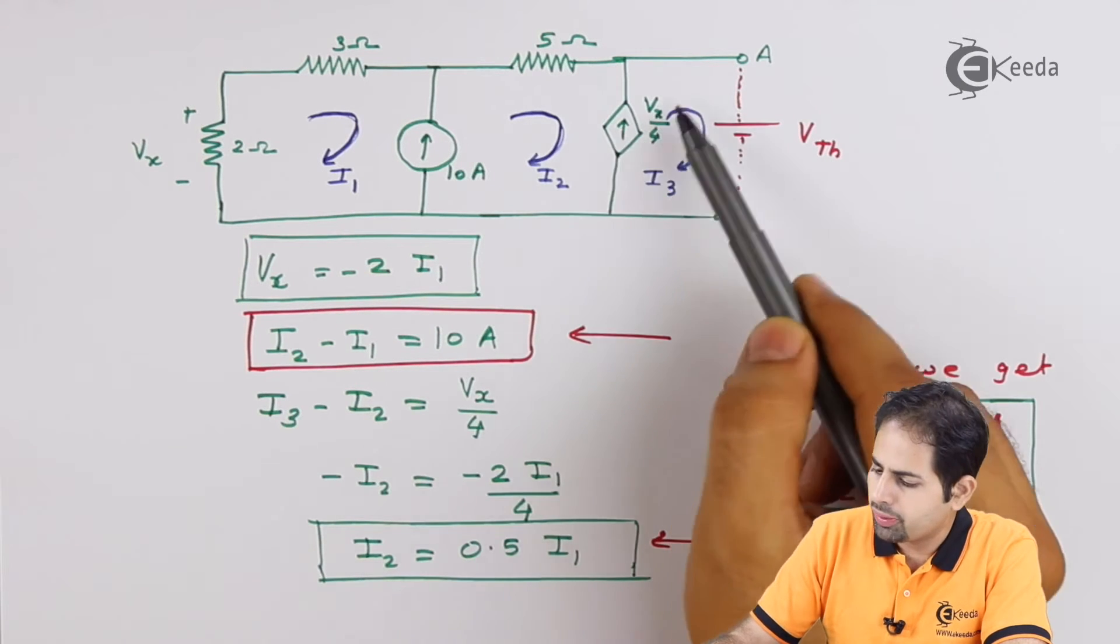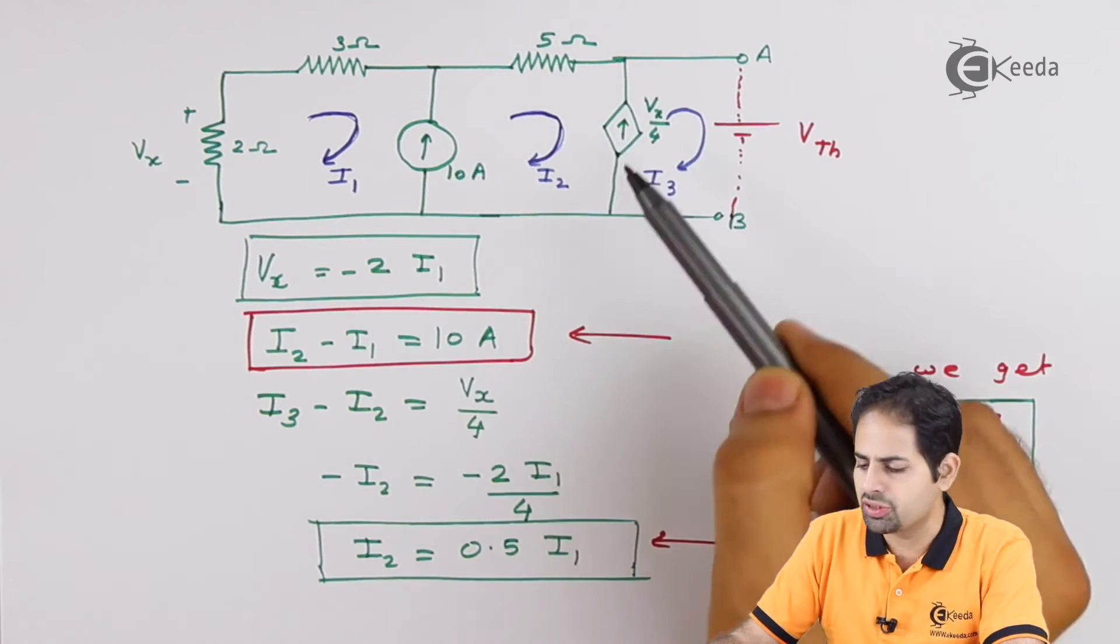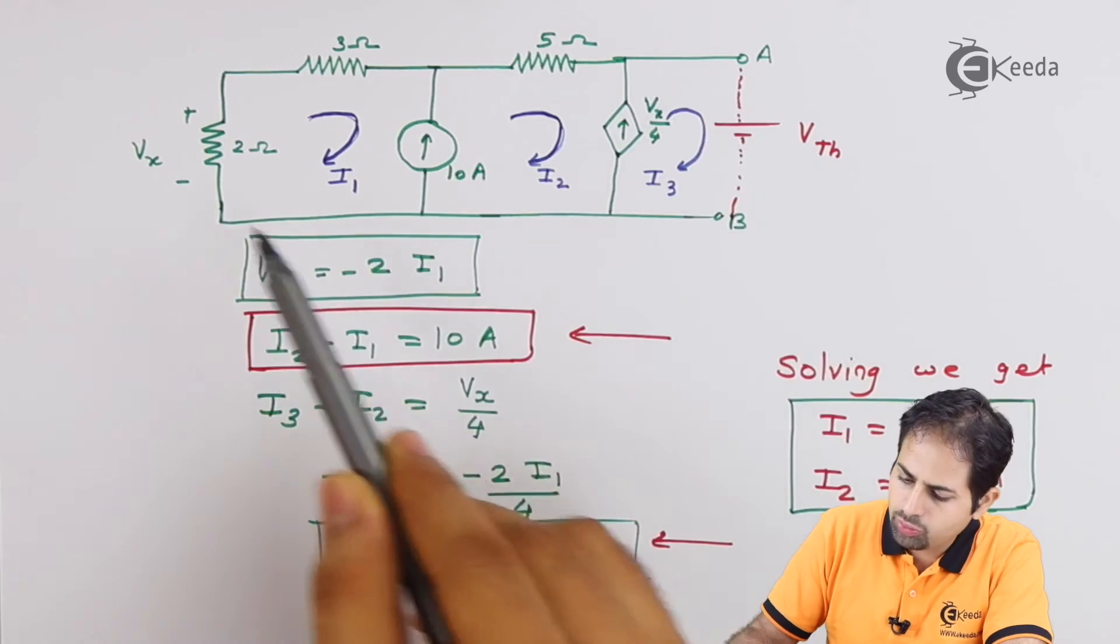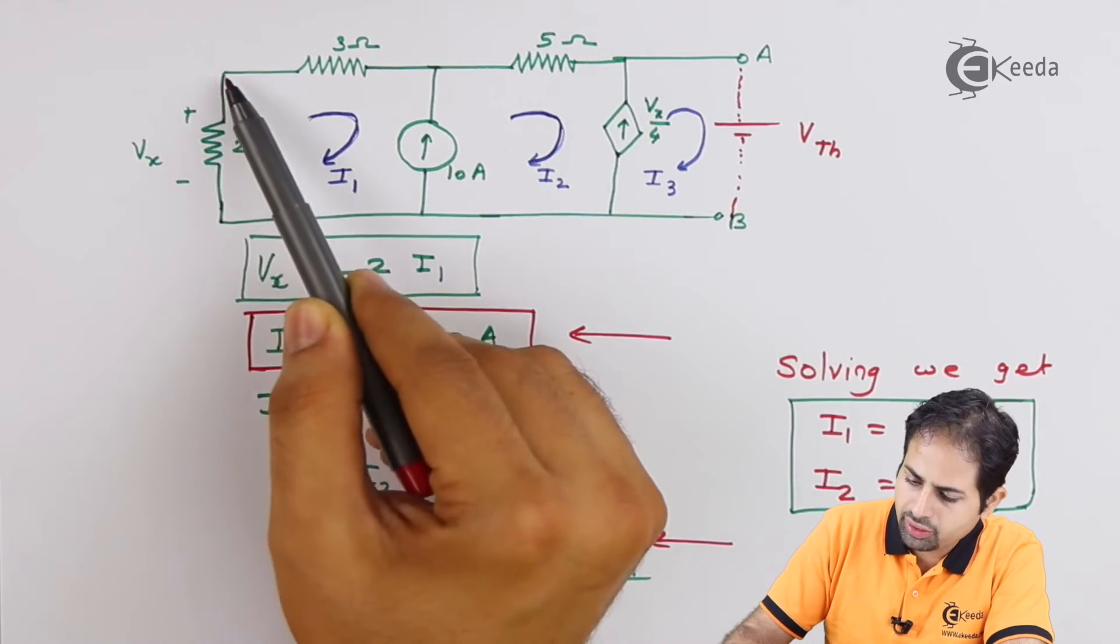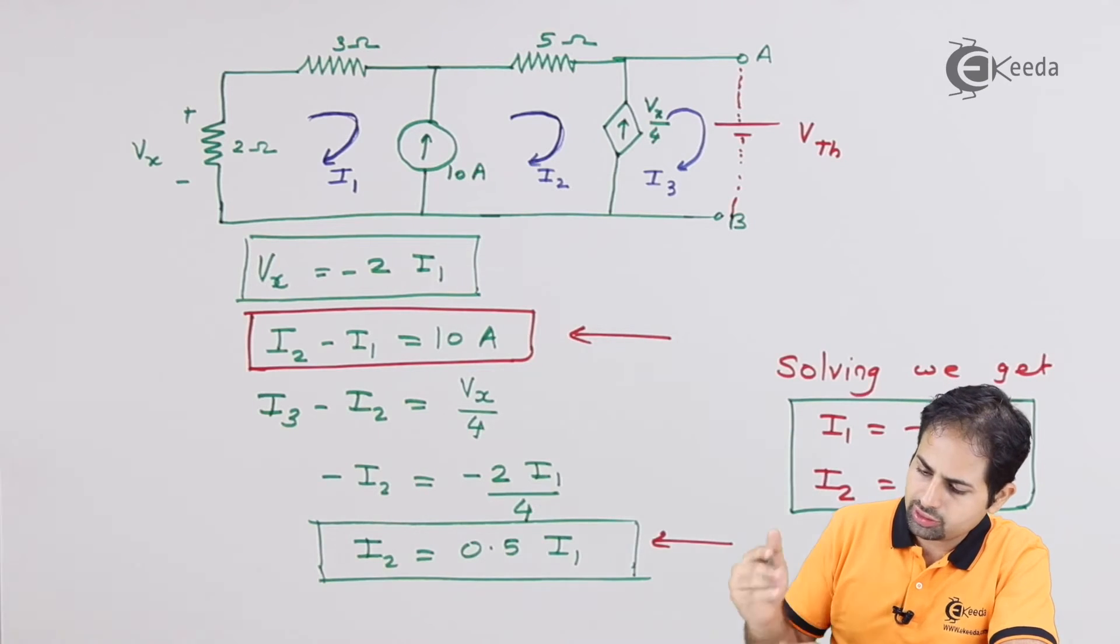Well, but I cannot do it right now here in loop 3 because you can see there is a condition of super mesh, there is a current source. So what I have to do, I have to apply it to this entire loop, means starting from this point, then here, and then going from A to B.